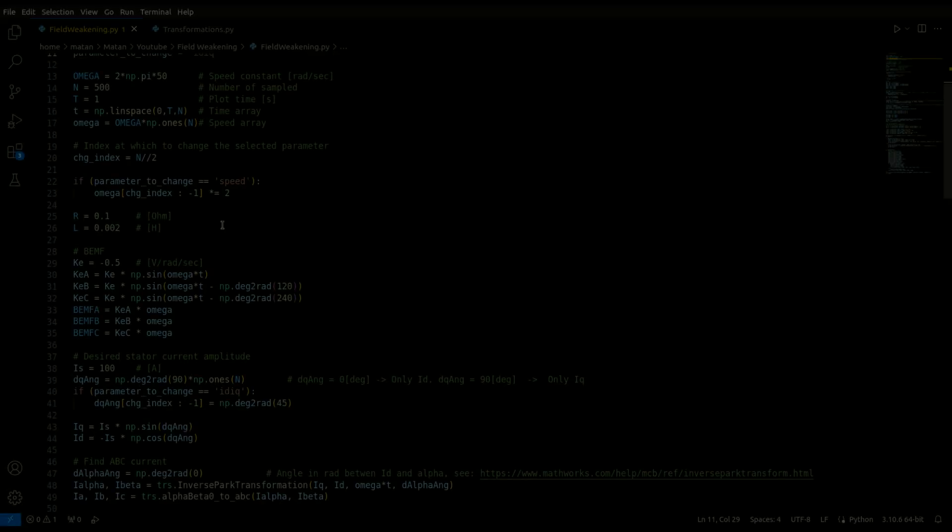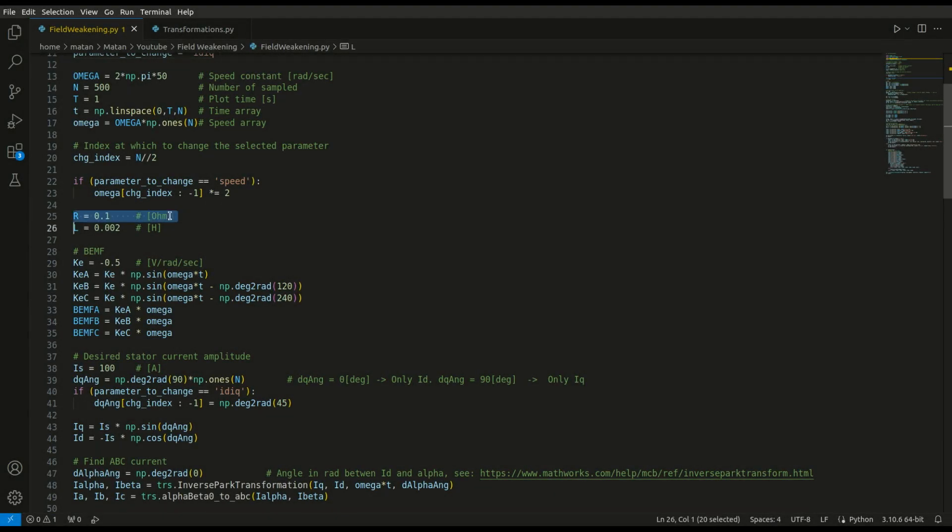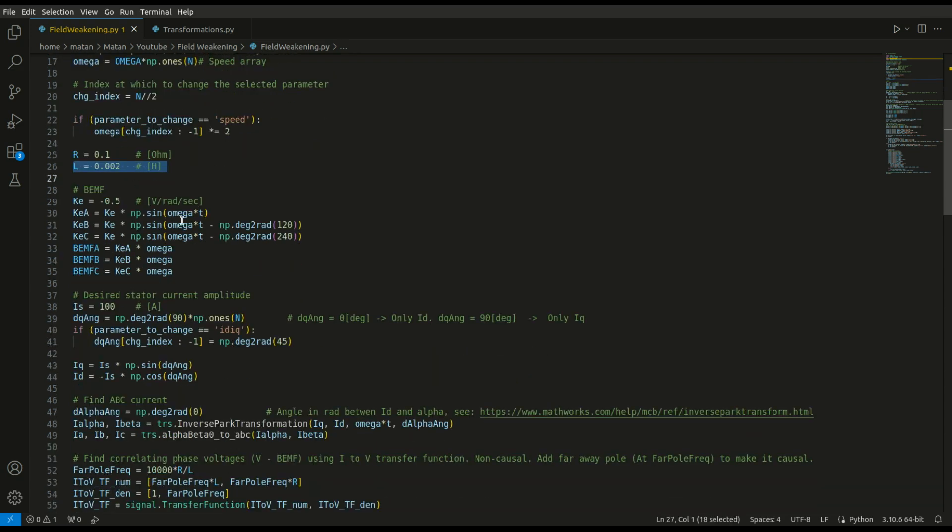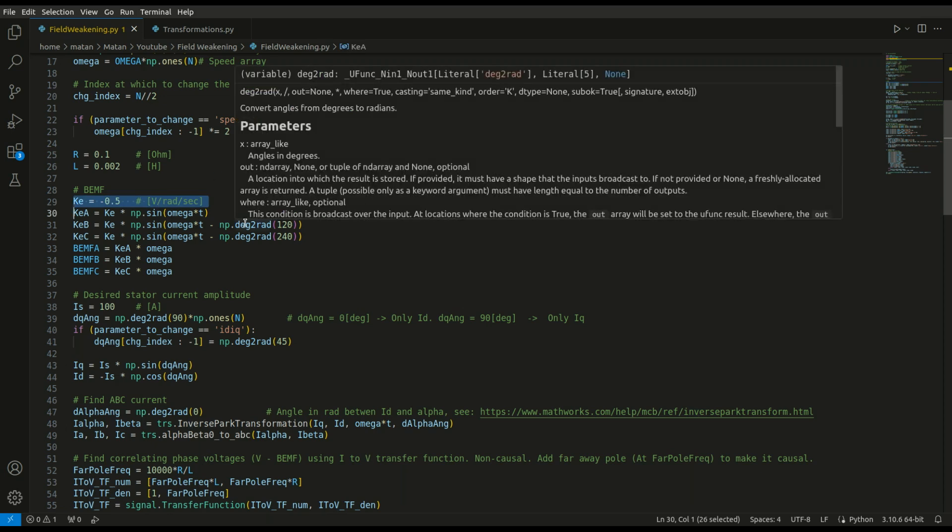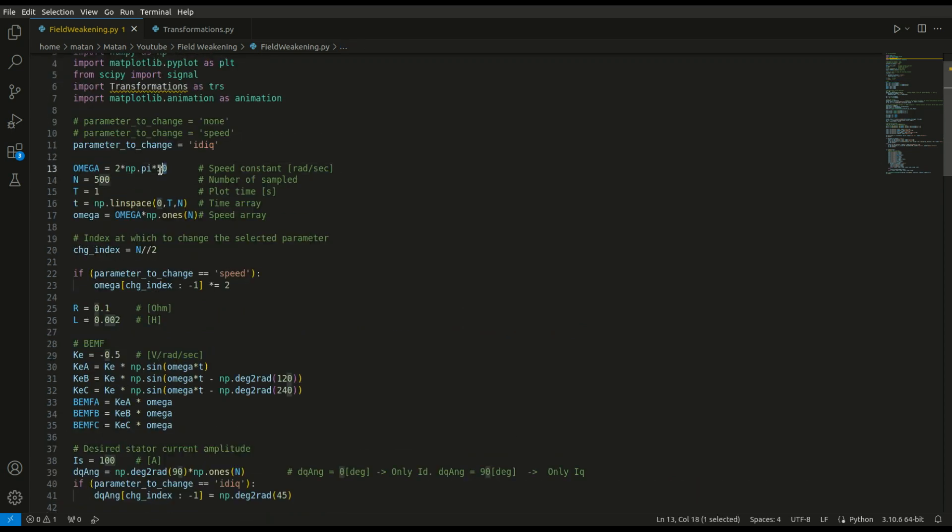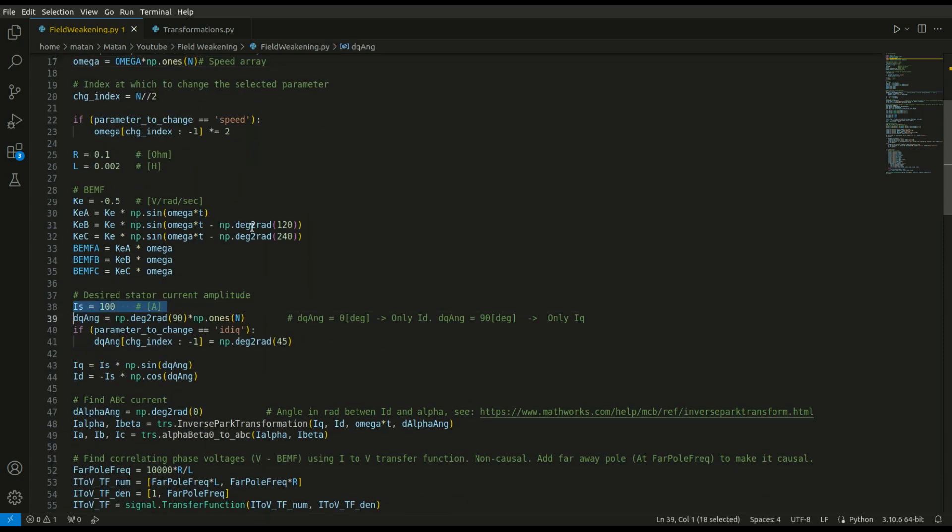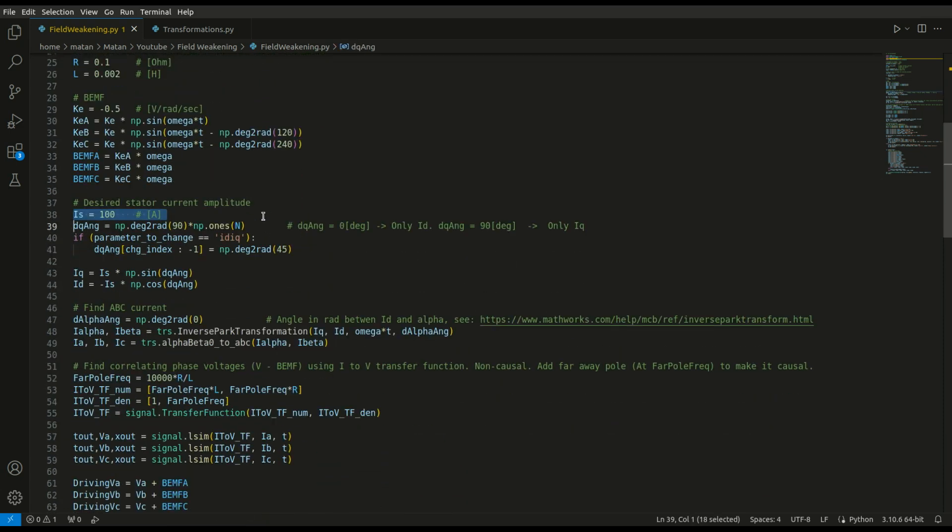I'll simulate the motor phase with a resistance of 0.1 ohms and an inductance of 2 millihenry, and I'll set the back EMF constant to 0.5 volts per radian per second. I'll also set the initial speed to 50 hertz. I'm going to command a stator current of 100 amps and see what the required driving voltage is to reach that current.